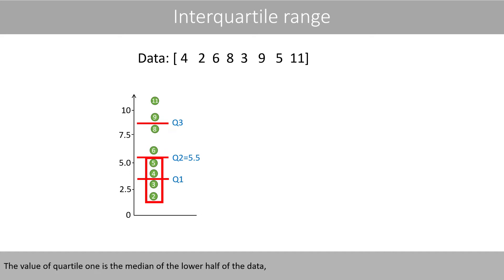The value of quartile 1 is the median of the lower half of the data, which is here equal to 3.5 since it is the mean value of 3 and 4. The value of quartile 3 is the median of the upper half of the data, which is here equal to 8.5.